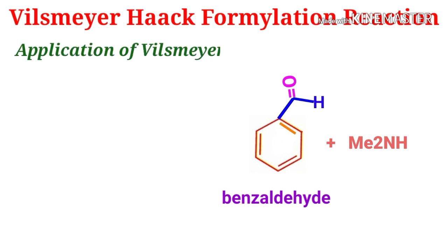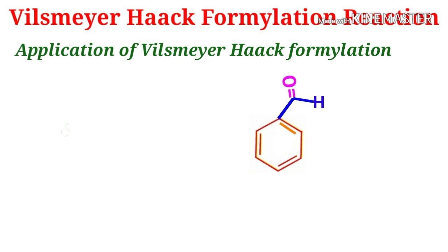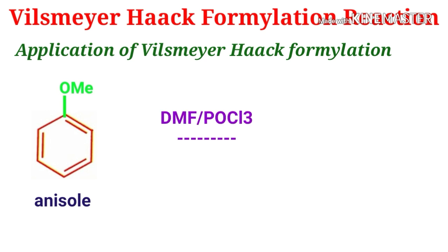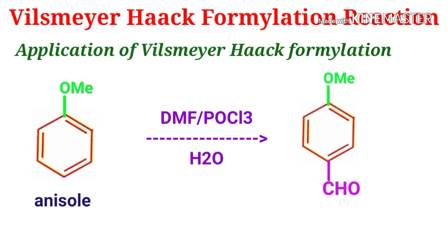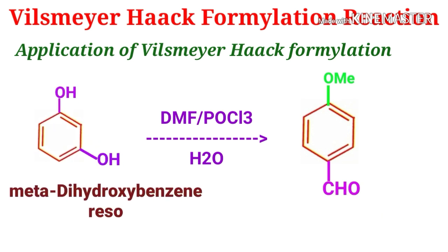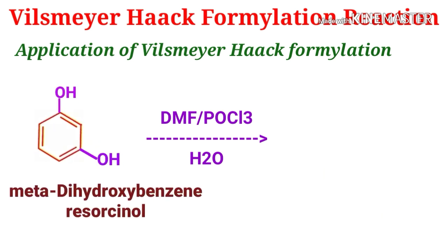For the applications of this formylation reaction: first, when the electron-rich aromatic hydrocarbon anisole is subjected to the same reagents — dimethylformamide and phosphorus oxychloride — followed by hydrolysis, they give an aryl aldehyde product. Here, the product is anisaldehyde. Second, m-dihydroxybenzene (resorcinol) also gives an aryl aldehyde with the same reagent.